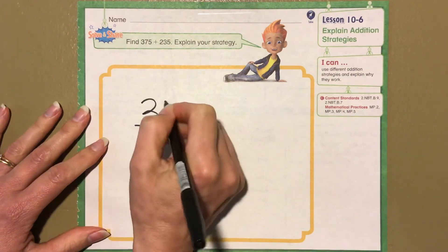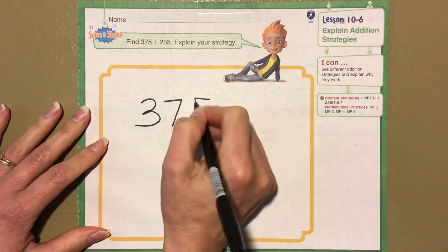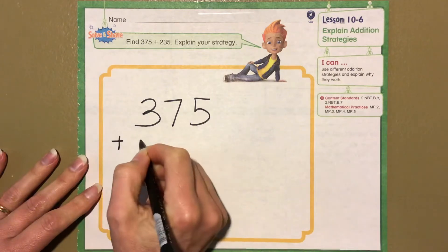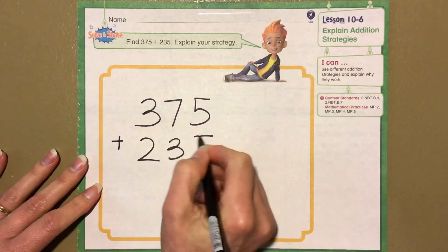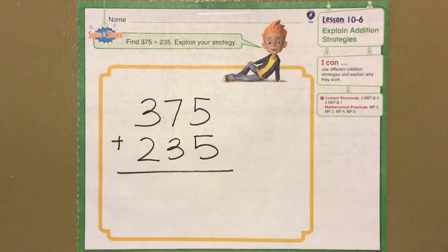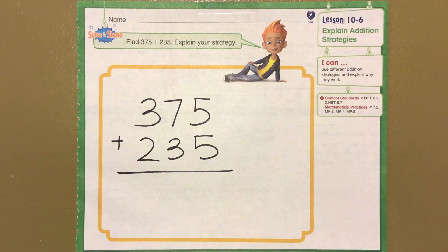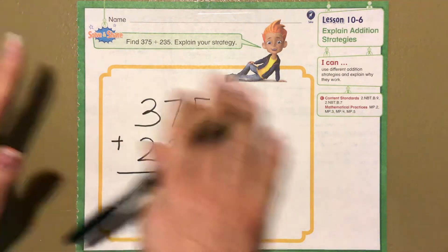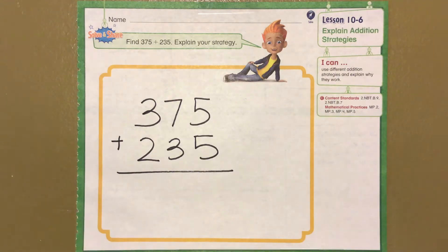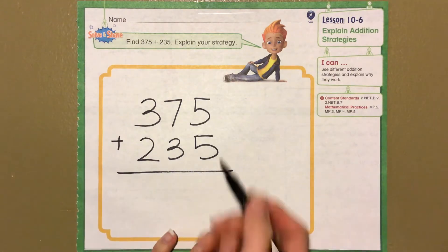We're going to find 375 plus 235. You can use any strategy you'd like — an open number line, compensation, partial sums adding the hundreds, the tens, and the ones. I'm going to do our classic old-school regular way to add using regrouping.